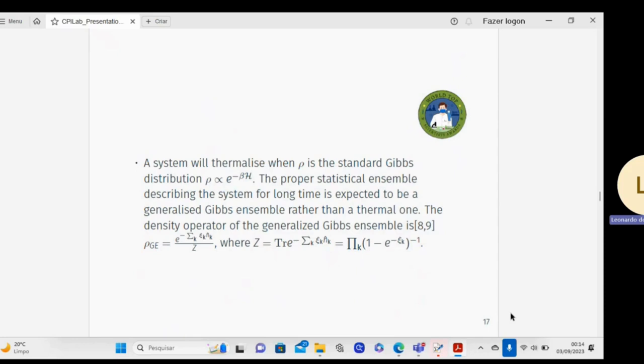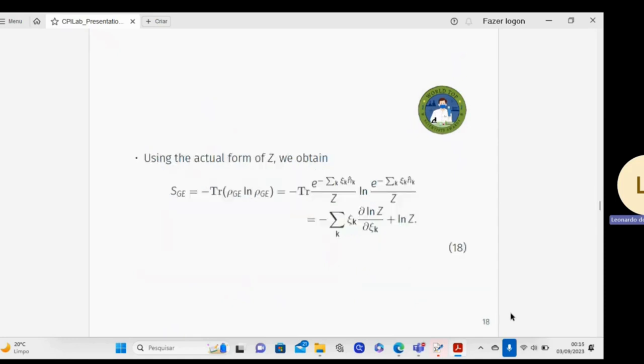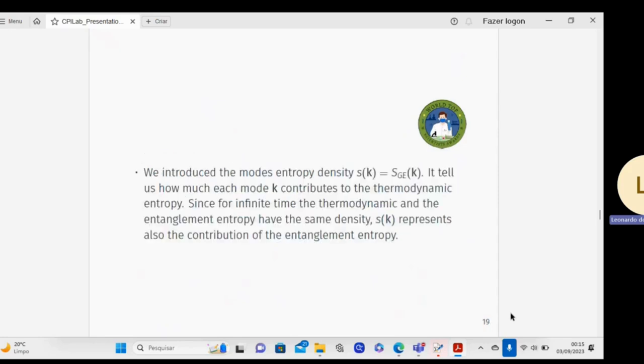The density operator of the general Gibbs ensemble is specified as follows. With the form of the partition function, we obtain the thermal entropy given by equation 18. We introduce the mode entropy density which tells us how much each mode k contributes to the thermodynamic entropy. Since for the final term, the thermodynamic and the entanglement entropy have the same density, this key represents also the contribution of the entanglement entropy.